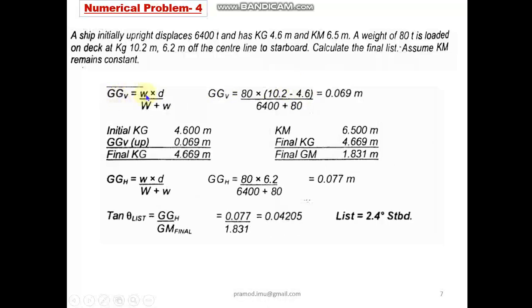GGv is w × d / (W + w). So here the weight added is 80 tons, your distance moved is 10.2 minus 4.6, your KG value, divided by your final displacement of the vessel, 6,400 plus the weight of the mass added. So that is why this addition is coming in the denominator. We get 0.069 meters as the vertical shift of center of gravity.